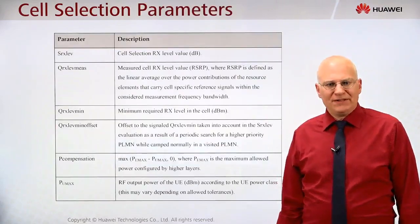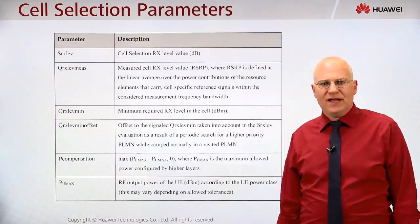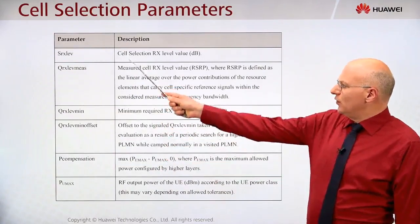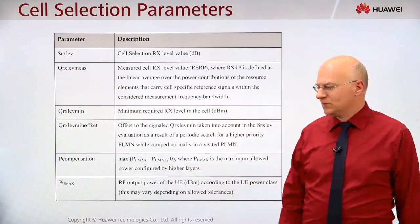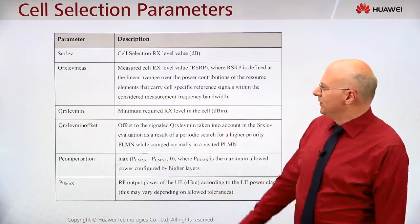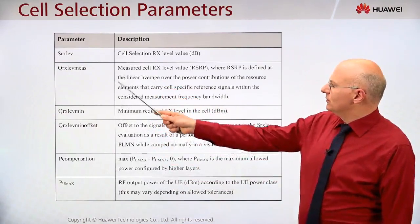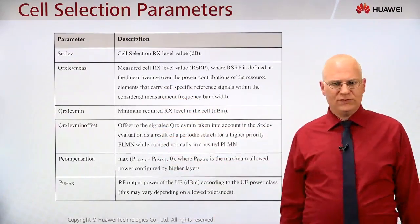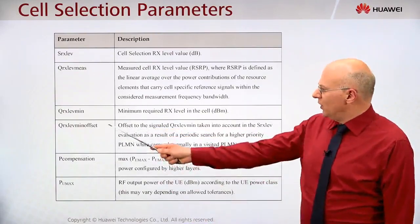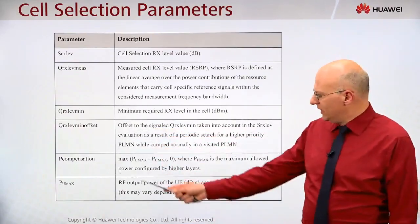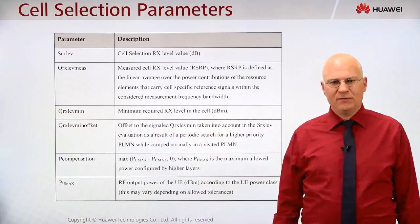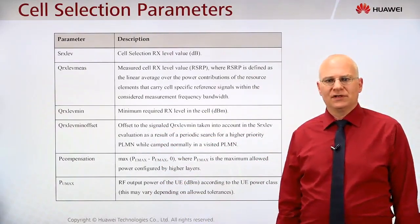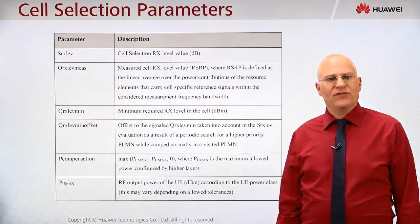The parameters which define the cell selection are listed here. I have already explained them: the receive level, the minimum receive level, offset, power compensation, and the maximum power which is allowed in the cell. Thank you for watching.